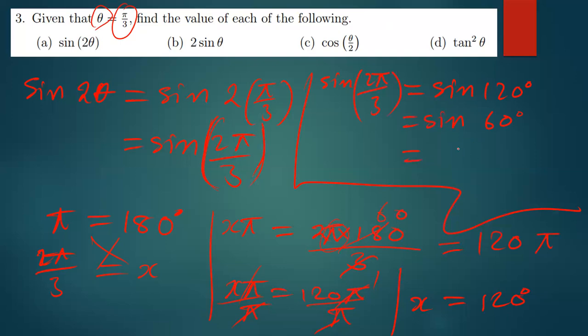So sine 60 degrees is simply just root 3 over 2. But when you look at 120, is it in the first, second, third, or fourth quadrant? It's in the second quadrant because it's above 90 but below 180. And in this quadrant, we know to say sine is positive, hence we leave the answer like that.